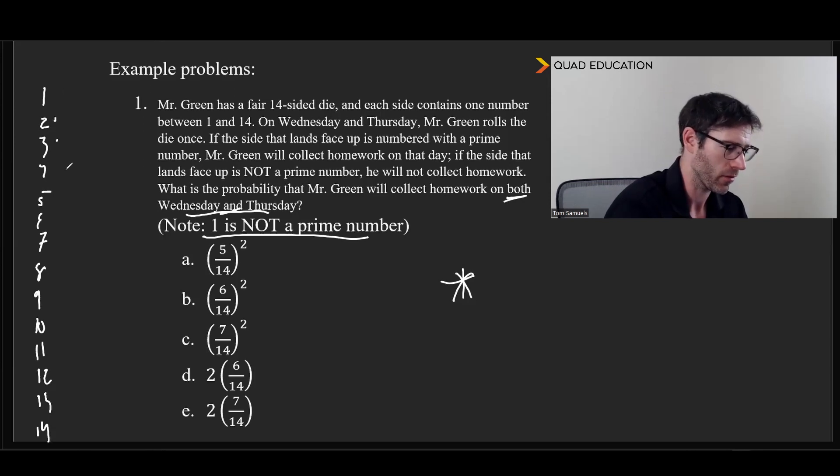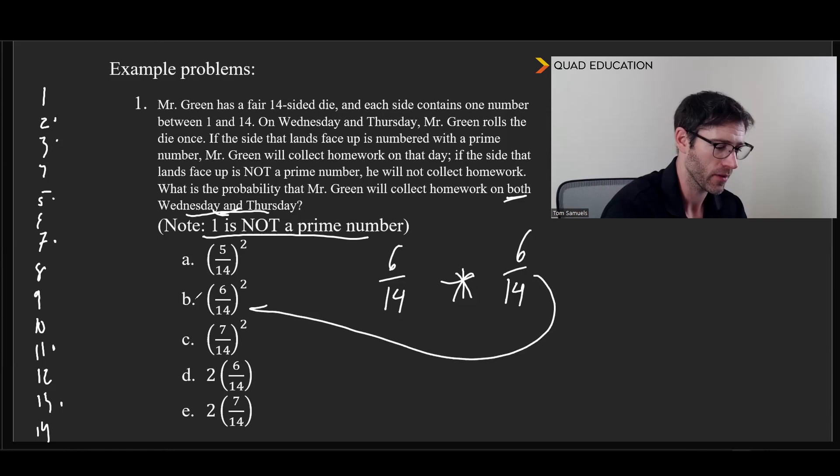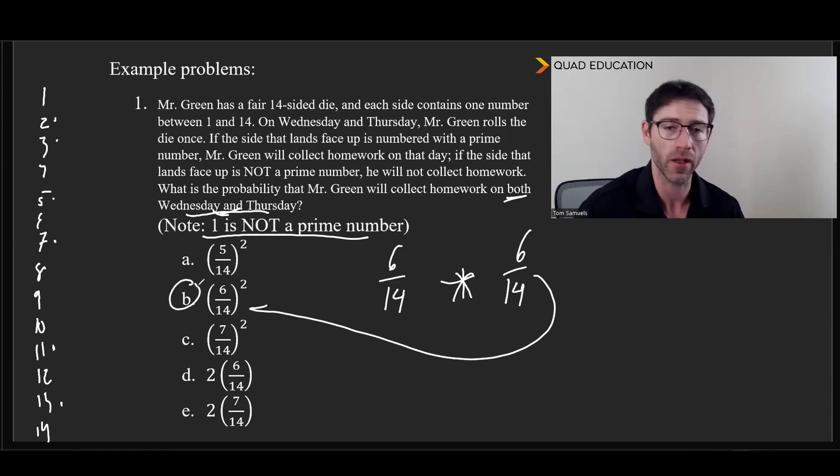So 1 is not, 2 is, 3 is, 5 is. Like 1, 2, 3, 4, nope, nope, nope, 5, and 6. So that's 6 out of 14. And so there's no replacement here. We're not losing any prime numbers - 6 out of 14 on the next day. So what we have there is B: 6 over 14 squared.